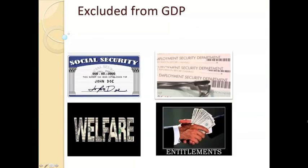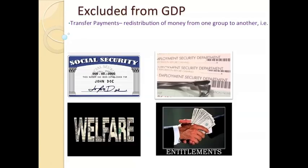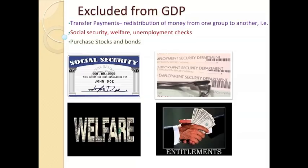The final thing that doesn't count towards GDP is what we call transfer payments. Transfer payments are when we have a redistribution of money from one group to another. This is typically talked about when we look at entitlement programs such as welfare, unemployment, social security, or any type of transfer payment that would go from one party to the next. In terms of transfer payments, we also don't include the sale of stocks and bonds because these are counted as financial investments and don't count as an actual sale of anything. However, the commission made by a stockbroker or a mortgage broker or anybody that sells a stock or a bond or some kind of financial asset does count towards GDP.